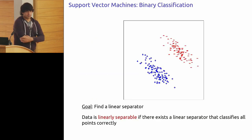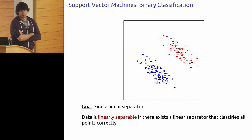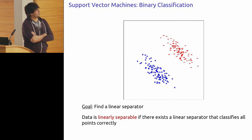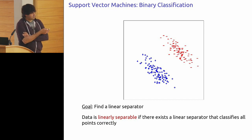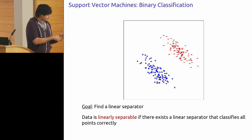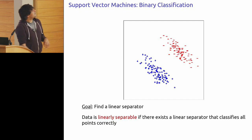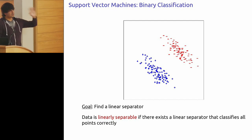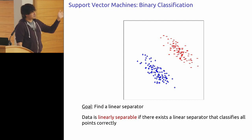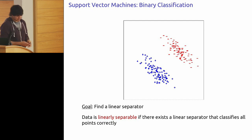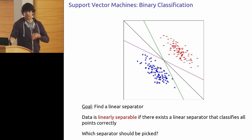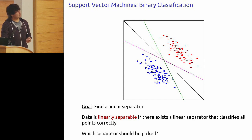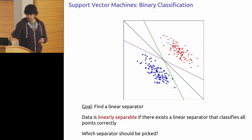Let's start with the binary classification problem again. If you're given data that's nice and cleanly separable — positives on one side, negatives on the other — and you want to find a linear separator, a line that separates the positives from the negatives, we know that if a linear separator exists, we can find it efficiently and classify all points correctly. As you can see in this picture, there are many such linear separators, and one question is which one you should pick and whether there's a good basis for picking one over the other.